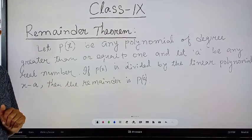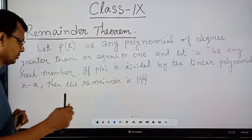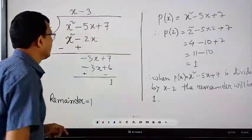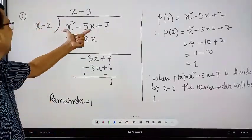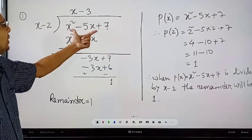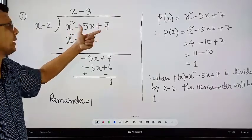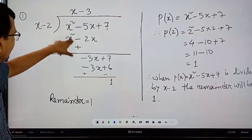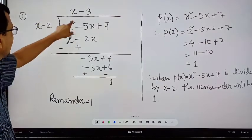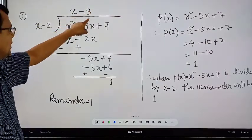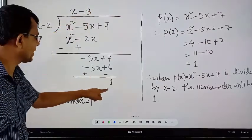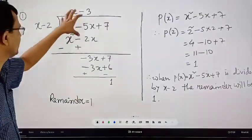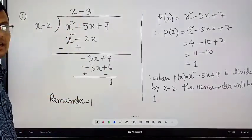What is the meaning of this Remainder Theorem? Let us see the first example. Let us divide x squared minus 5x plus 7 by x minus 2. If we divide, the quotient will be x minus 3 and the remainder is 1.